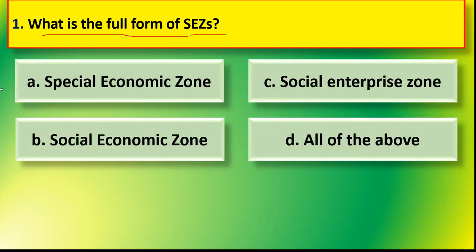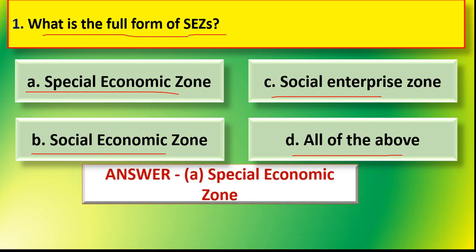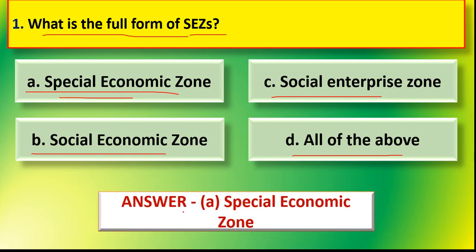Options are: option A special economic zone, option B social economic zone, option C social enterprises zone, or option D all of the above. The correct answer is option A special economic zone. S stands for special, E stands for economic, Z stands for zone. So option A is the correct answer.